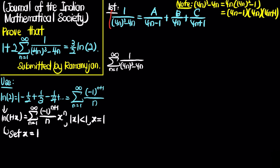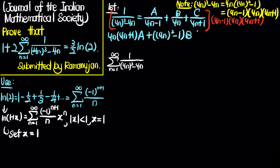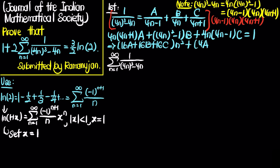Multiplying through by (4n minus 1) times 4n times (4n plus 1) to clear the denominators, we get: A times 4n times (4n plus 1) plus B times (16n² minus 1) plus C times 4n times (4n minus 1) equals 1. Collecting terms by n², n, and constant: (16A + 16B + 16C)n² + (4A minus 4C)n minus B equals 1.